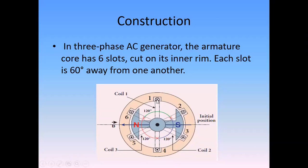The armature cores are fixed inside the six slots. This is one armature core, this is the second armature core, and this is the third armature core. Three armature cores are fixed inside the six slots, and each slot is sixty degrees away from the next.